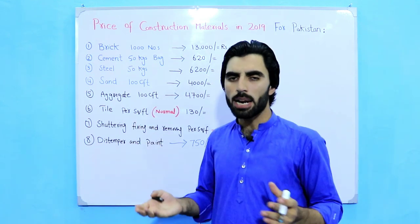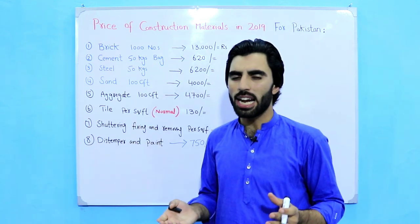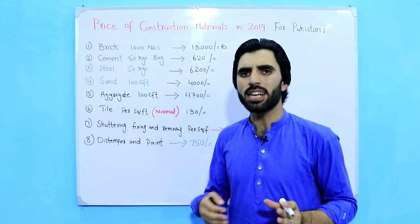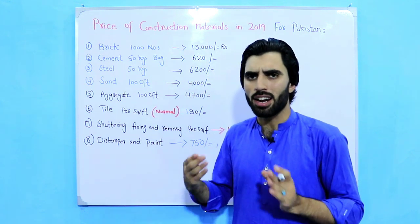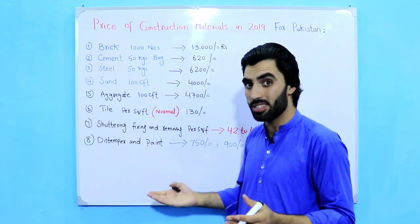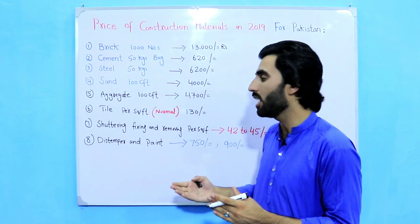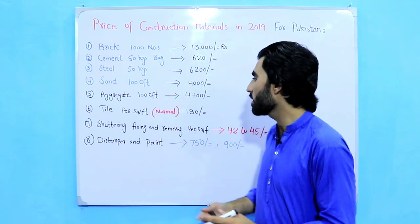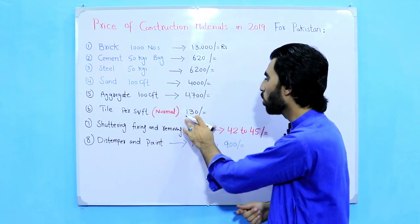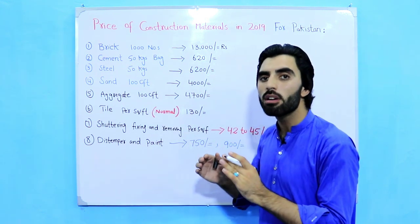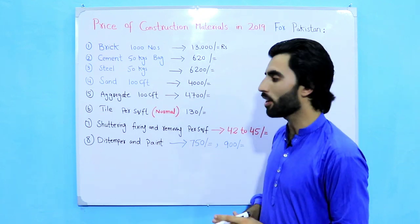For tiles, the price is per square feet. This is a normal, standard tile — not high quality or luxury — and its price is 130 rupees per square feet.